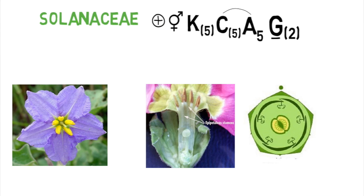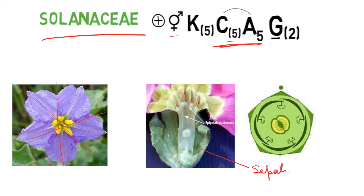Next is Solanaceae. The flower is actinomorphic and bisexual. Calyx has five united sepals; corolla has five united petals. The androecium has five stamens in an epipetalous condition — the stamens are fused with the petals — which is the characteristic of family Solanaceae. The gynoecium has two united carpels with a superior ovary, and axile placentation is seen.